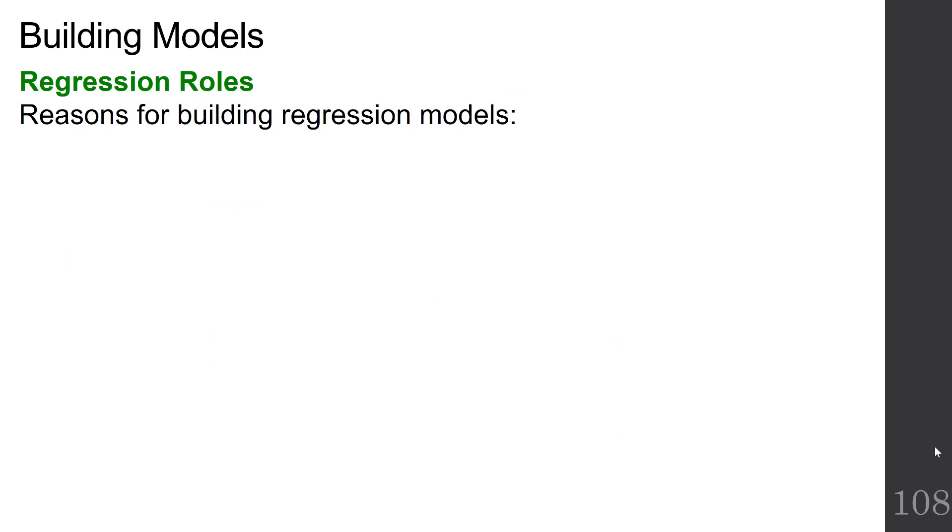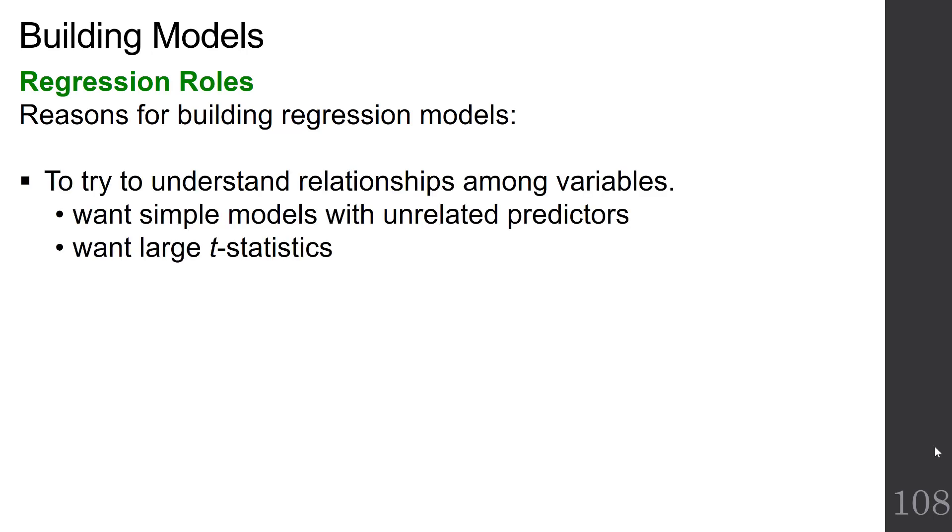So let's talk about why we build regression models. There are two reasons that we build regression models. One is to explore the relationships among the variables. If this is our goal, we want simple models with unrelated predictors, and we want large T statistics, or otherwise known as small p-values. If you have a large T, you have a small p-value.